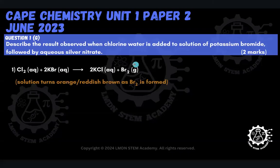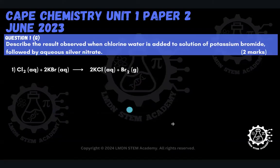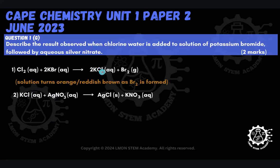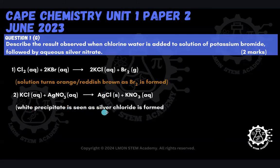In the second step, after forming KCl and Br₂, we add aqueous silver nitrate. When we add the aqueous silver nitrate to the KCl that was formed, the chloride comes in, kicks out the nitrate ion, and we get AgCl forming along with KNO₃ — potassium nitrate. AgCl is a white precipitate, so we will see a white precipitate being formed as silver chloride is produced. The chloride combines with the silver, taking the place of nitrate, forming AgCl, while the potassium combines with NO₃ to give KNO₃. With that, we are completely done with Question 1.